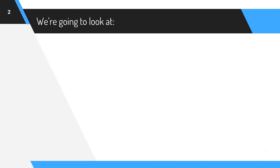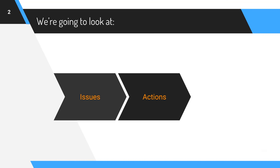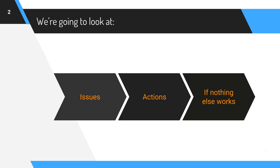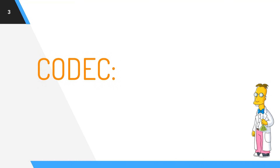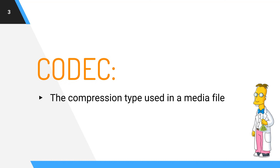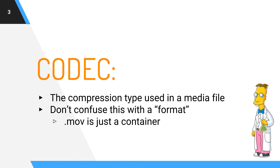So what we're going to look at: the issues, actions that you can take, and what if nothing else works. But let's clear up a term here — what a codec is. It's the compression type used in a media file. Don't confuse this with a format. A format like a .mov file — .mov is just a container. .mp4 is just a container. It's really important to understand that those are containers.